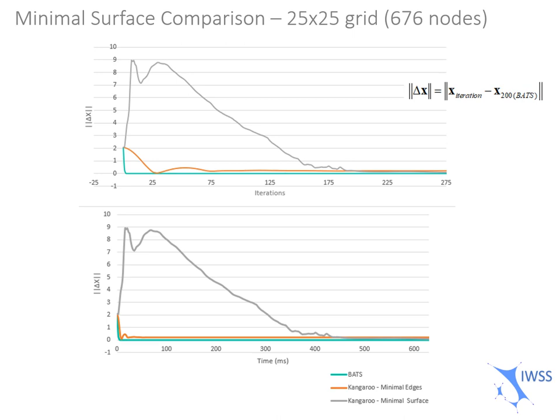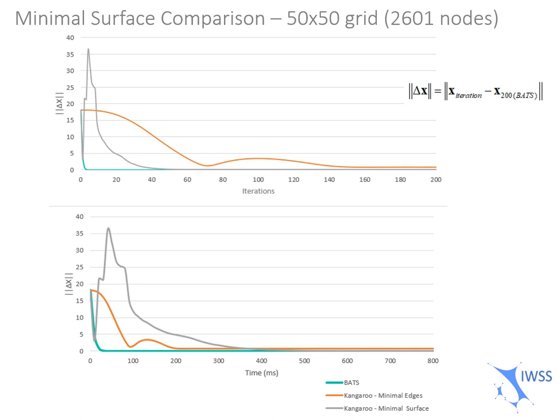Also, in terms of performance, you can see over time, the BATS converges really quickly for a dense problem of 50x50 grid, while both methods require 200 to 400 milliseconds to converge. BATS converges in approximately 30 milliseconds.